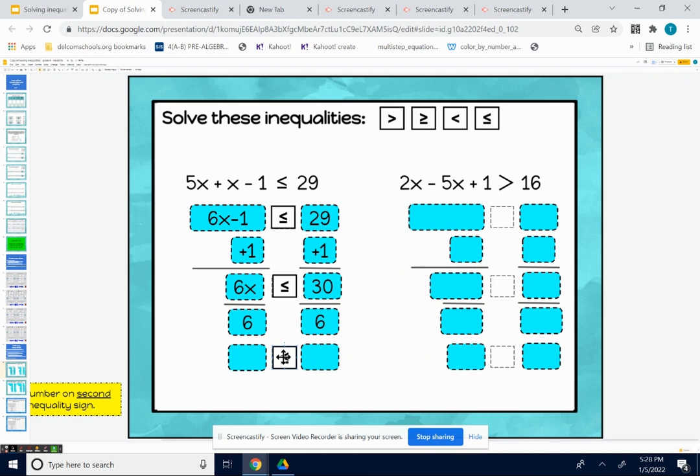So our answer becomes x on the left. 30 divided by 6 is 5 on the right. So the solution is x is less than or equal to 5.